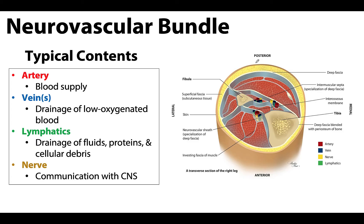So most structures of the body — this includes viscera, muscle, skin, etc. — need four main things to function properly.